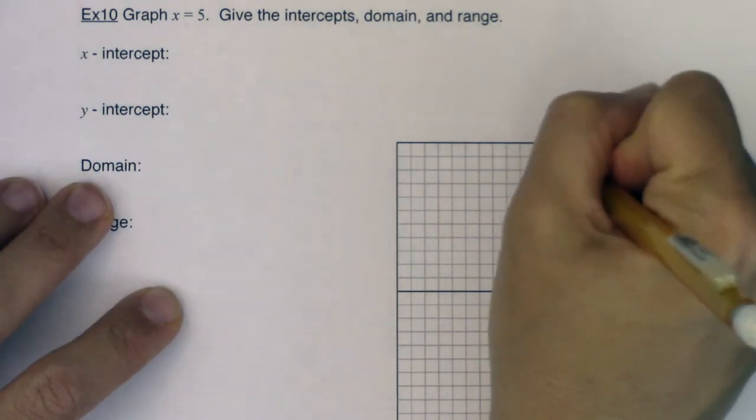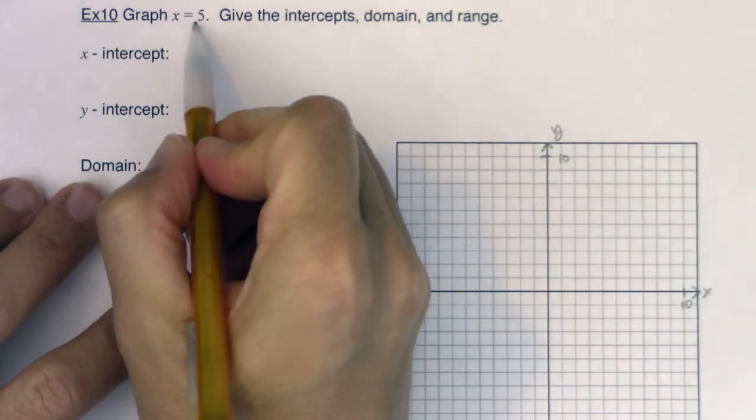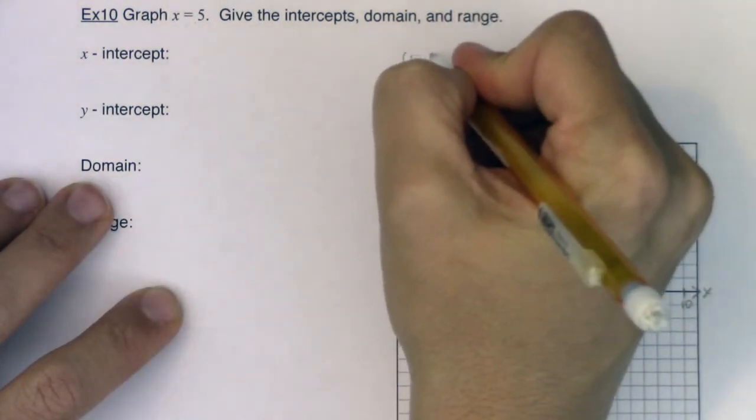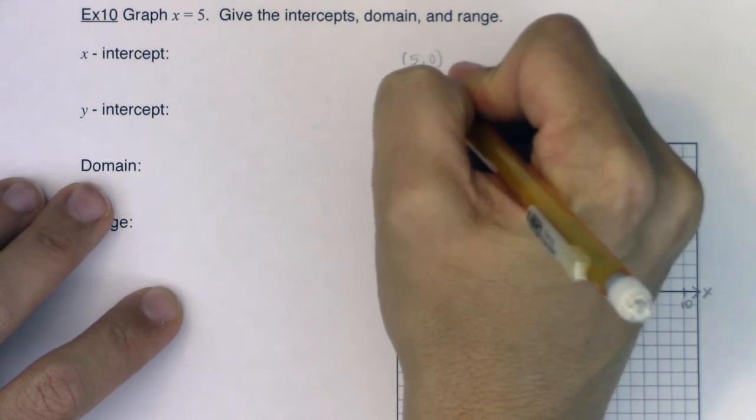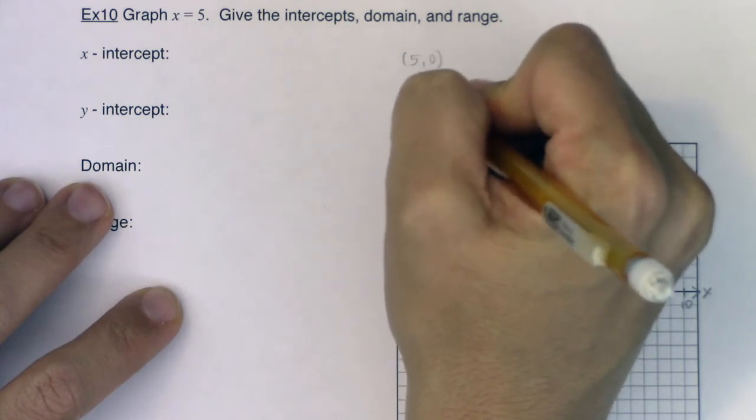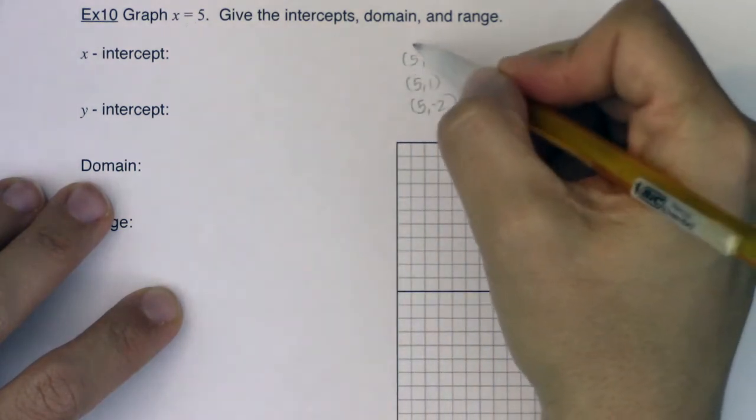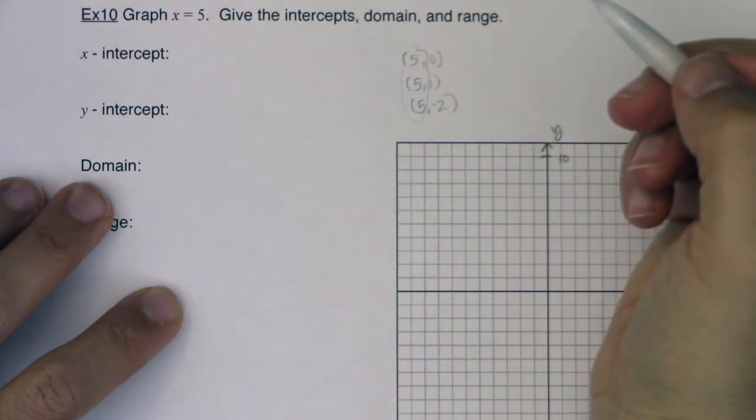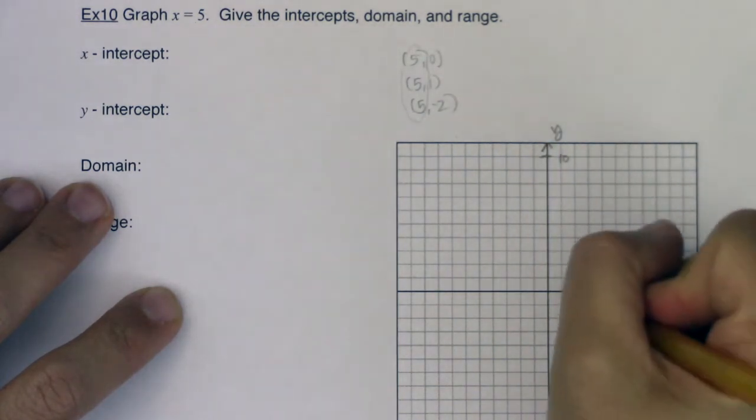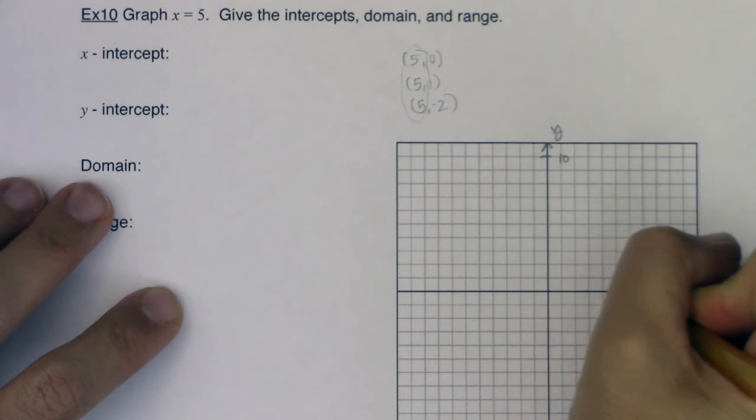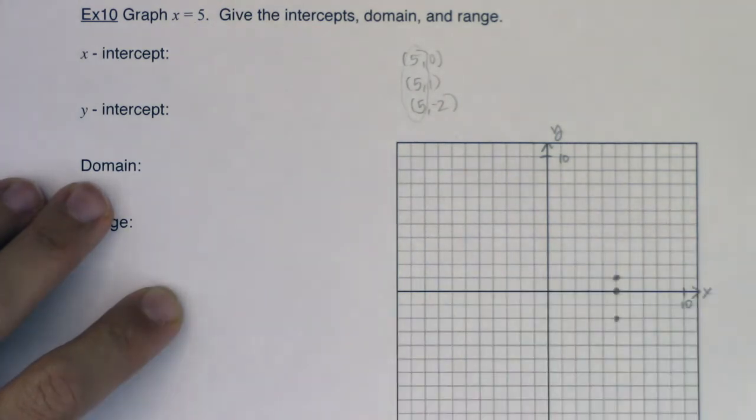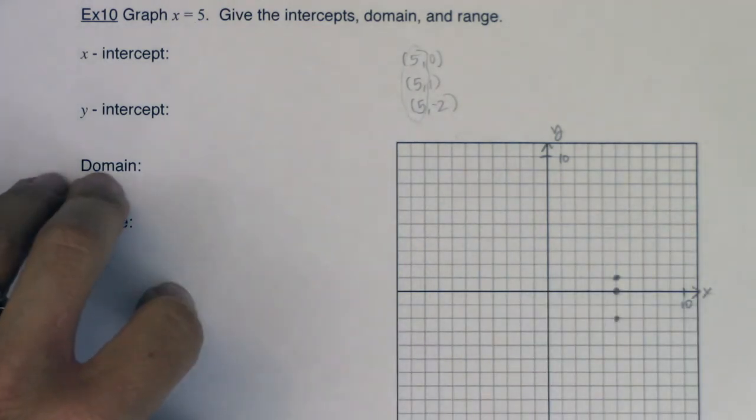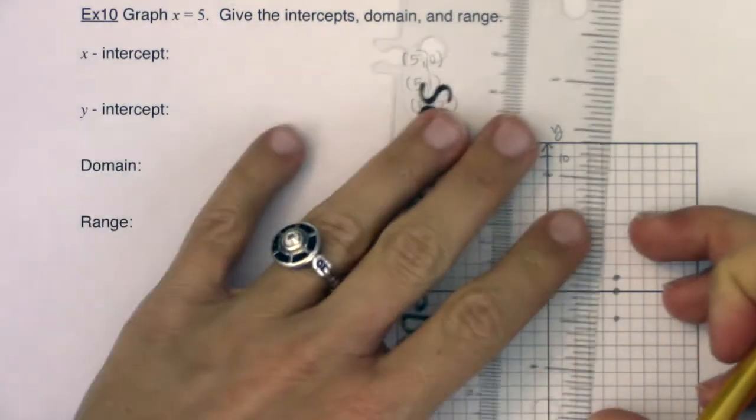Now I want you to think about an ordered pair that has 5 as its x-coordinate. I can think of things like 5, 0, maybe 5, 1, 5, negative 2. Any of those ordered pairs have x equal 5 for their x-coordinate. So let me go graph a few of these. So 1, 2, 3, 4, 5. We'll do 5, 0, 5, 1, 5, negative 2. And I can see that vertical line forming there. So let me go ahead and draw that in.